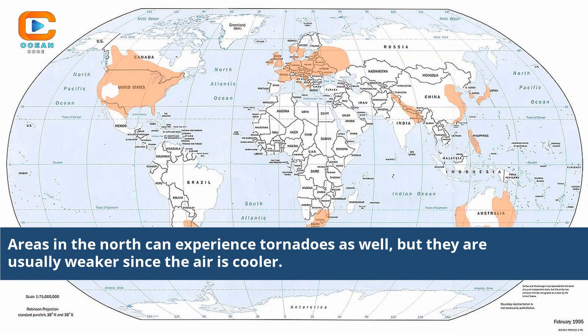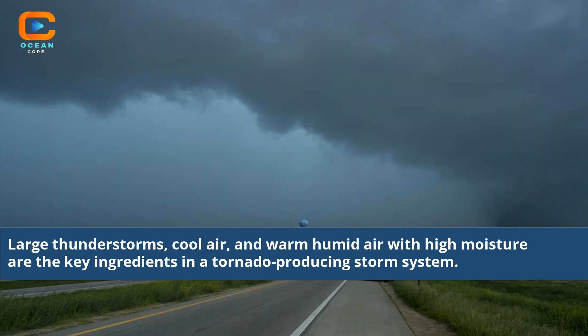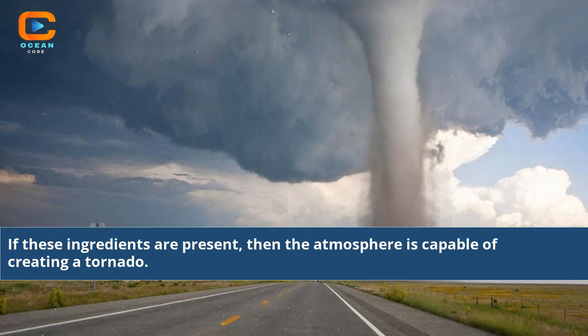Areas in the north can experience tornadoes as well, but they are usually weaker since the air is cooler. Large thunderstorms, cool air, and warm humid air with high moisture are the key ingredients in a tornado-producing storm system. If these ingredients are present, then the atmosphere is capable of creating a tornado.